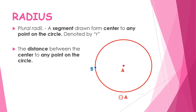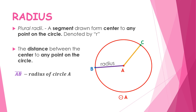On Circle A, let's have point B on the circle. If you draw a segment joining point A and point B, you have a radius — so segment AB is a radius of Circle A. Similarly, if point C is also on the circle, segment AC is also a radius of Circle A.